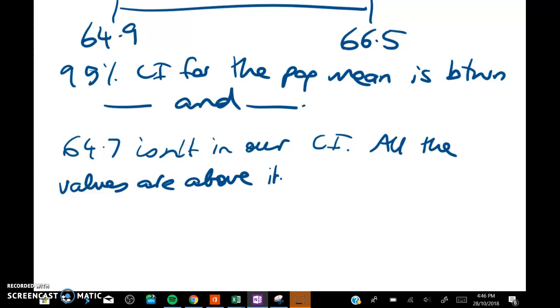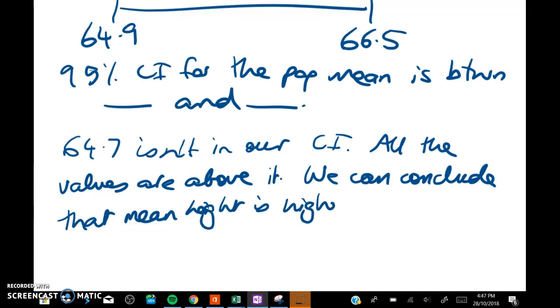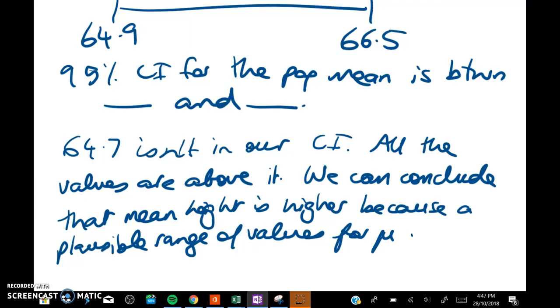So we can conclude that the mean height is higher because a plausible range of values for μ is from 64.9 to 66.5 centimeters. Now I'm going to show you the mark schedule so you can see exactly how it was marked. Here we go.